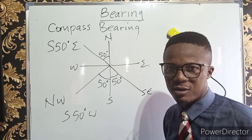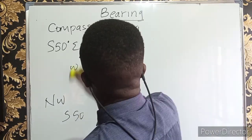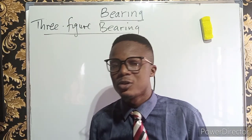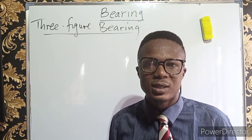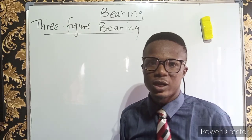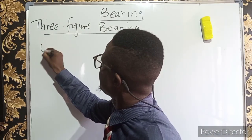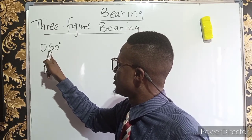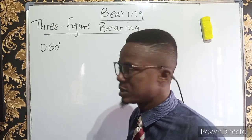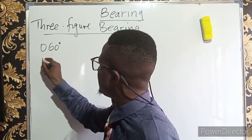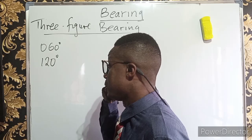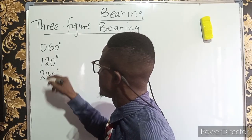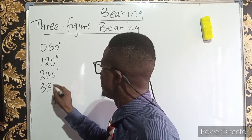Now let's look at the three-figure bearing, also called the three-digit bearing. For the three-figure bearing, we don't use north, east, south, west notation. The bearing is given in three digits. For example, 60 degrees is written as 060 — you must attach a leading zero because it is made in three digits. You can also have 120 degrees, 240 degrees, or 330 degrees.